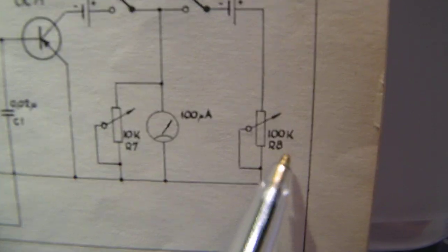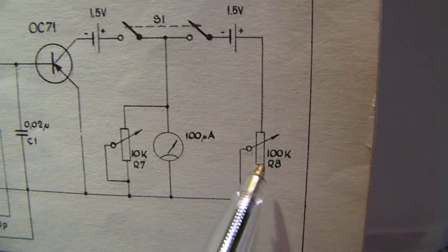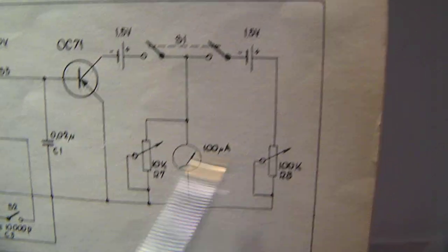And with that resistor, potential meter, you can null out the meter.